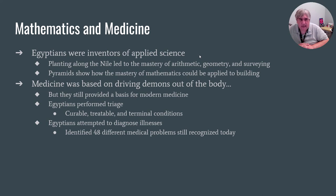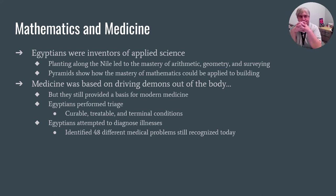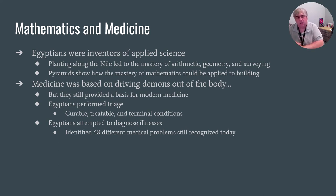When it comes to math, science, and medicine, the Egyptians were at the forefront. They used applied science all the time — through their mastery of geometry and surveying, they were able to control floodwaters, and the pyramids were perfect shapes geometrically. Their medicine, while still being about driving demons out of the body, at least incorporated real thought. They performed a form of triage — assessing whether you had a curable disease, a disease that needed long-term treatment, or whether they just needed to make you comfortable. Believe it or not, they were able to diagnose and treat 48 different medical problems that are recognized and treated today.